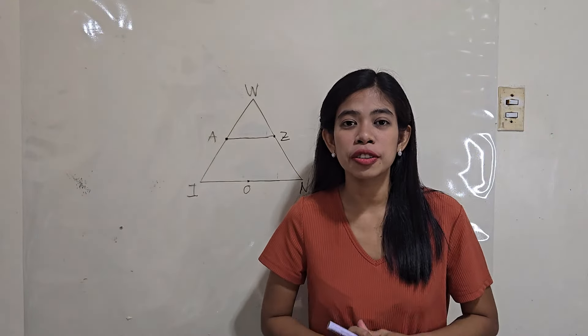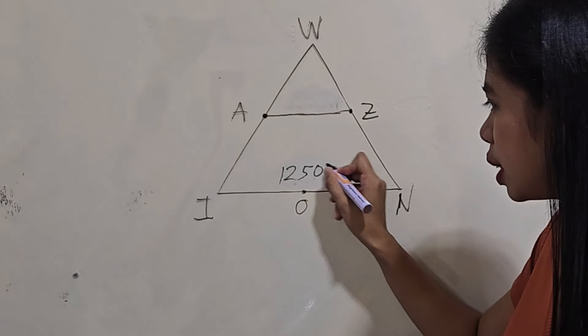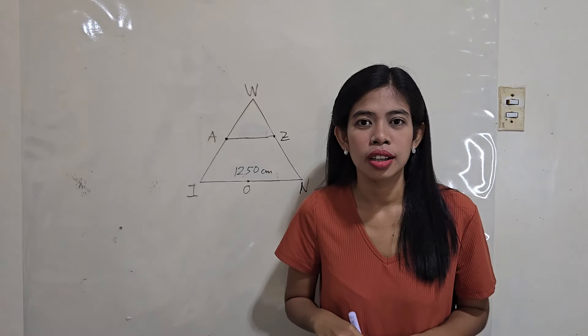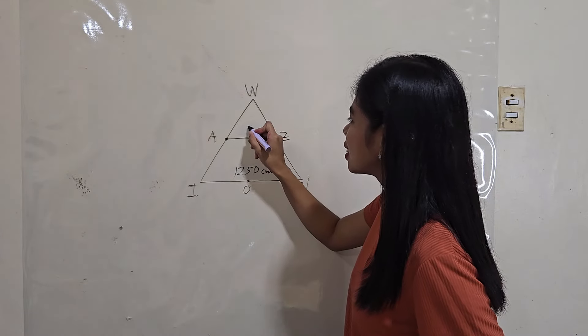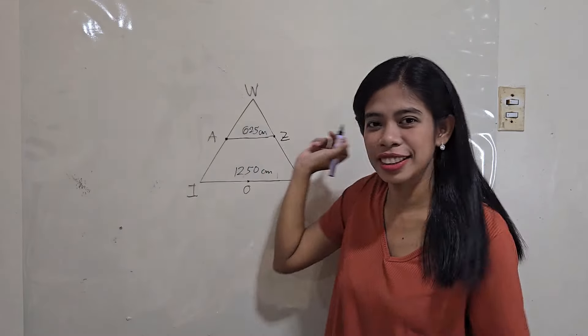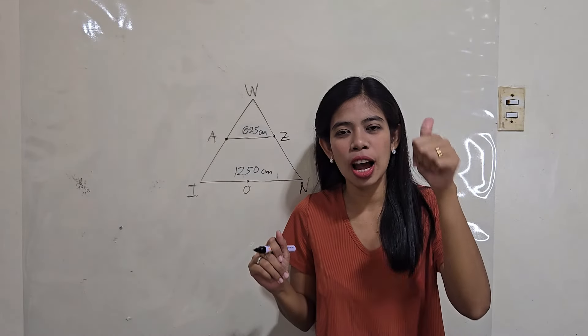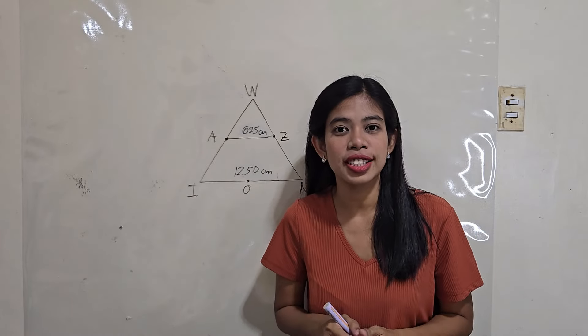Now, what if the measure of the third side is 1,250 centimeters? What's the measure of the midline? So, that's 625 centimeters. So, that's how we get the measure of the midline given the measure of the third side.